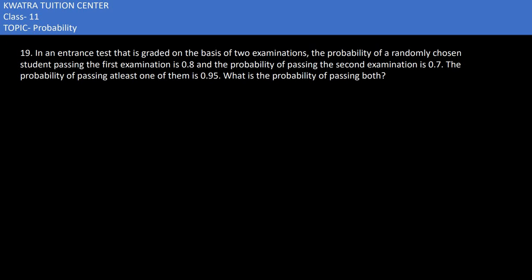Starting with the 19th part, here it says we have an entrance test that is graded on the basis of two examinations. Probability of a randomly chosen student passing the first examination is 0.8. Probability of A is 0.8.